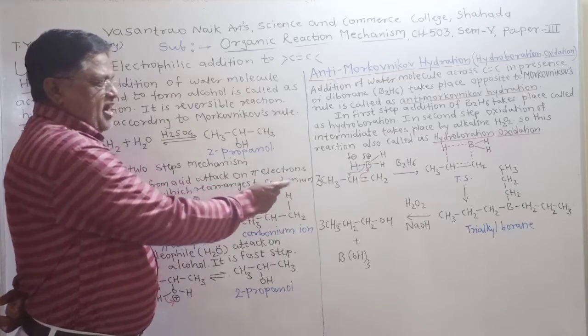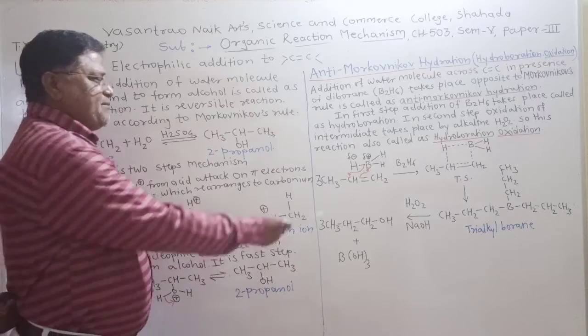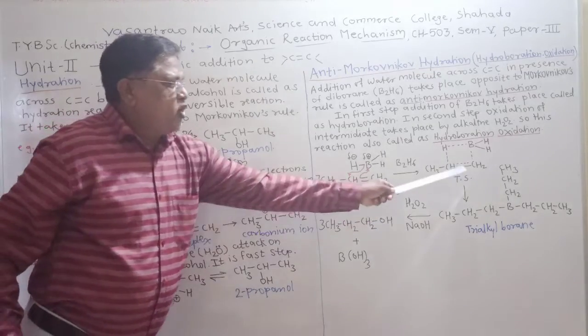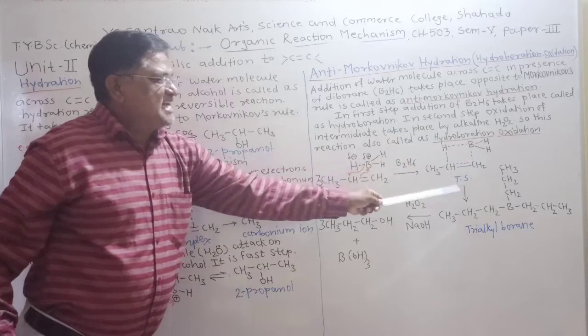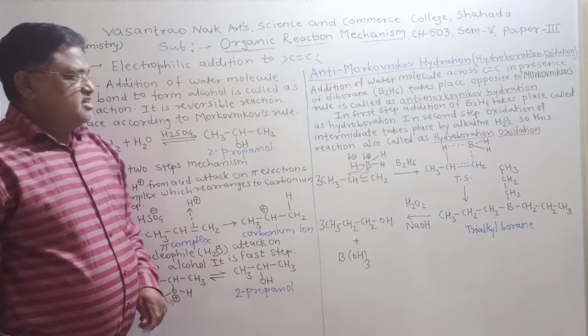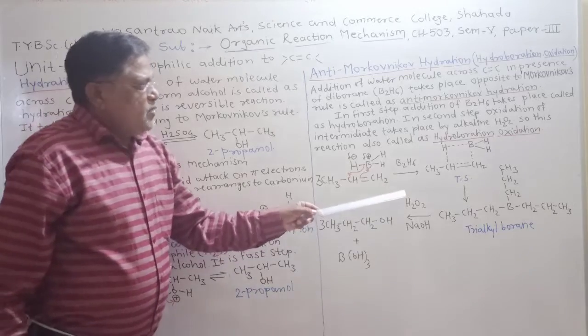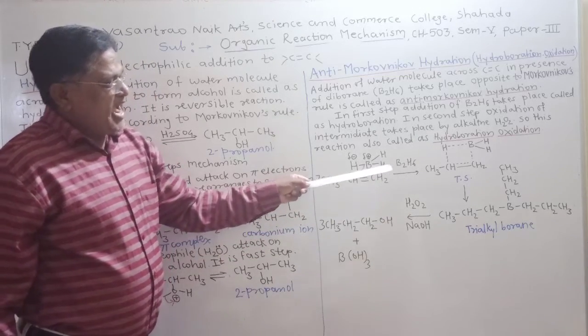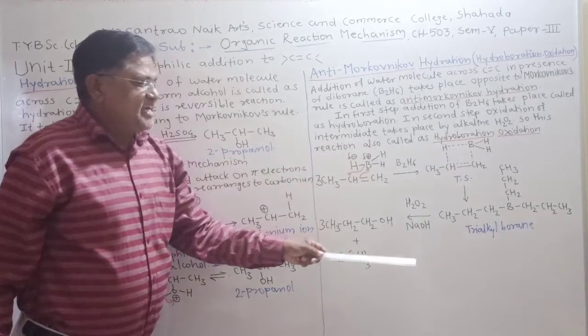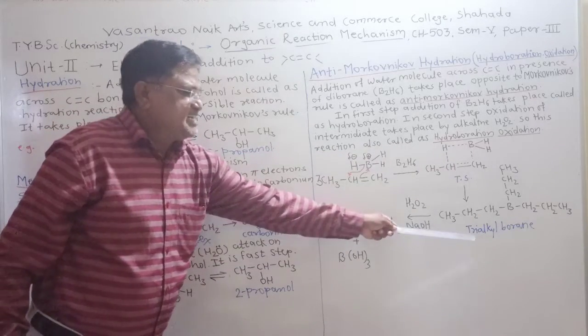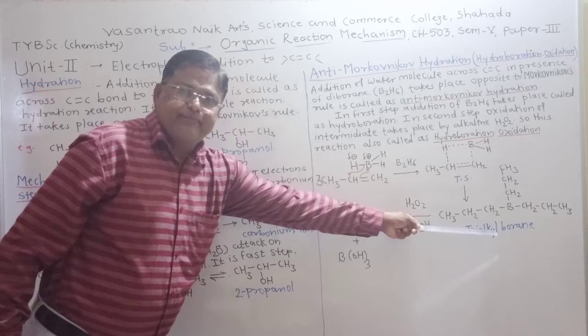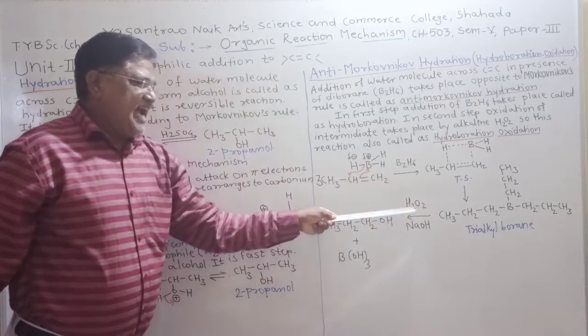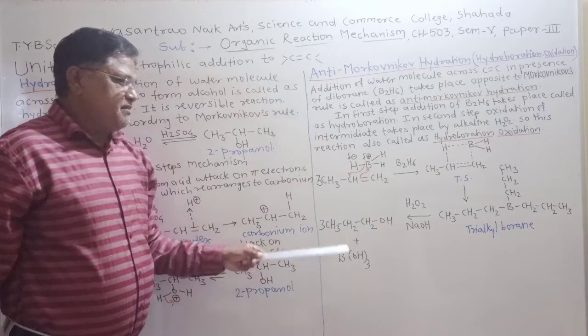Now, this BH bond attacks on the pi-electrons of alkene to form the four-membered cyclic transition state. The remaining two BH bonds also add in the same way and we get the intermediate, that is trialkyl borane. This trialkyl borane undergoes alkaline hydrolysis to form alcohol.